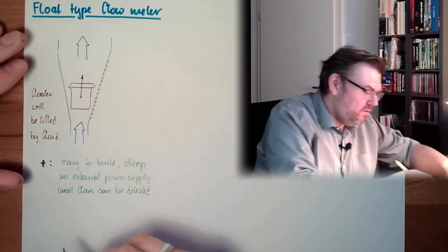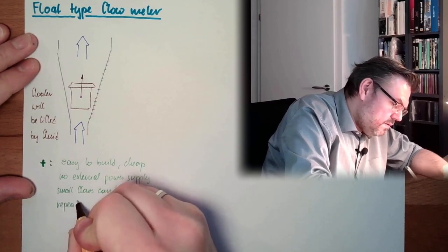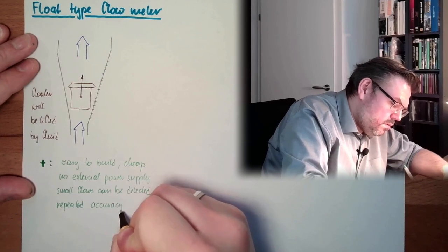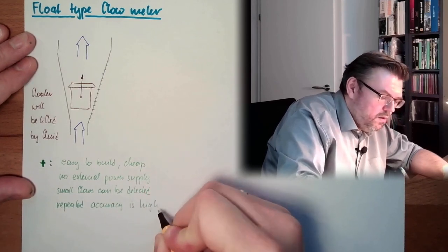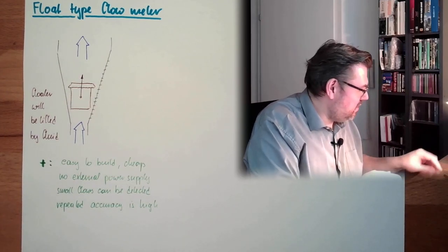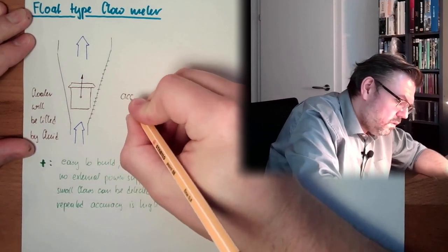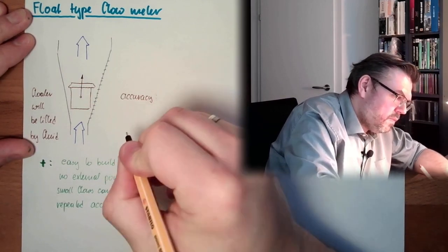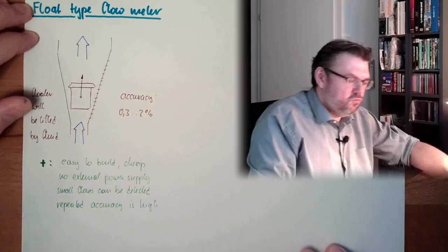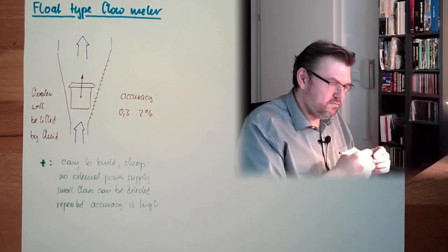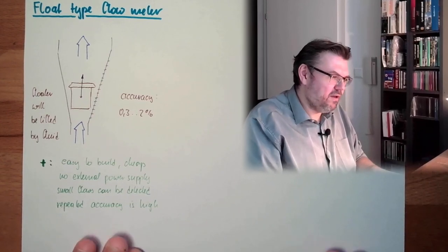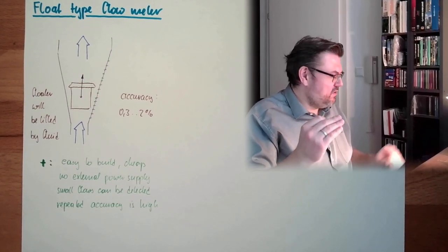The repeat accuracy, repeated accuracy, is high. Accuracy, by the way, total accuracy is around 0.3 to 2 percent. 0.3 is really high, 2 percent okay. The repeated accuracy is very high. Why I say repeated accuracy? Because that's already the downside.